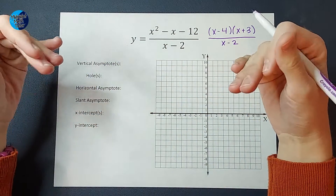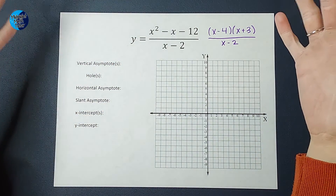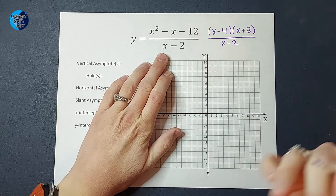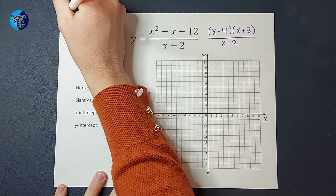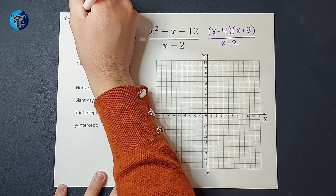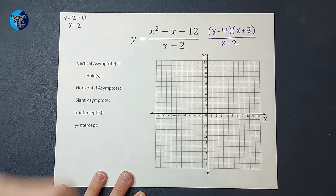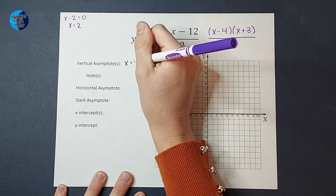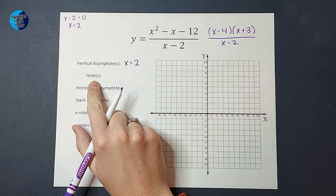If you have been doing math for any amount of time, you know that we do not deal with zeros in our denominators — it's one of the biggest no-nos in math. Vertical asymptotes are formed where the denominator could equal zero. So to figure out where that is, I'm going to set it equal to zero. I have x minus 2 equals zero, add two to both sides, and get x equals 2. That is my vertical asymptote. You can have more than one sometimes, but in this example we just have one.